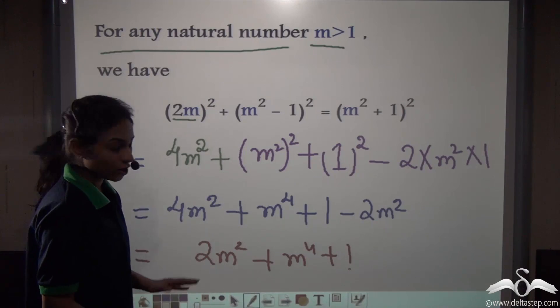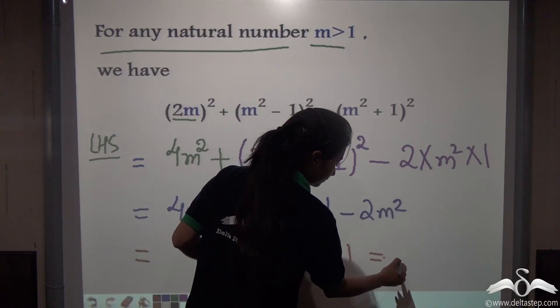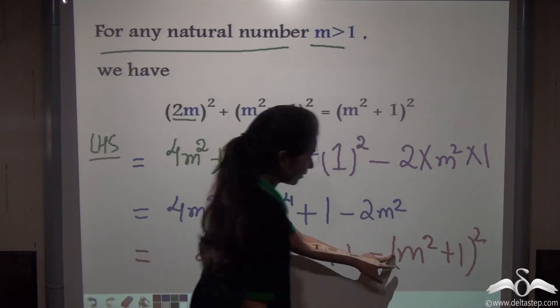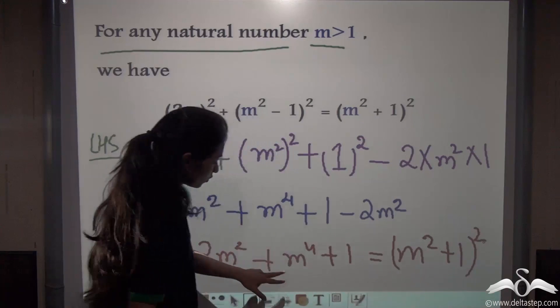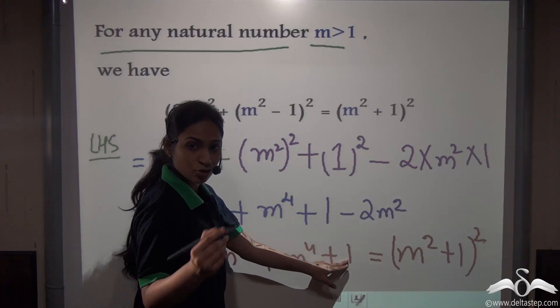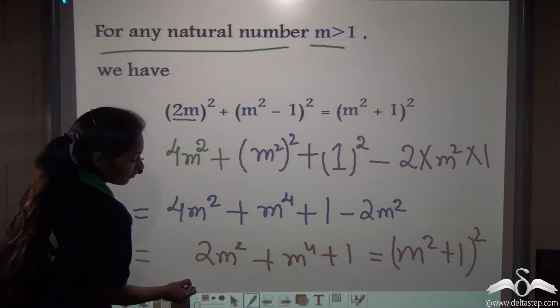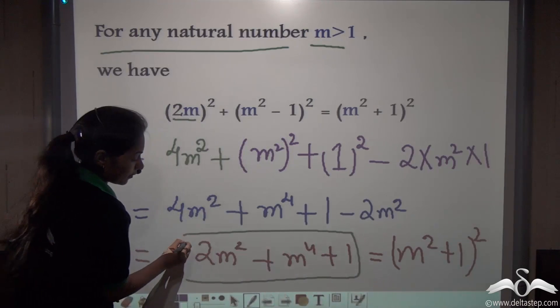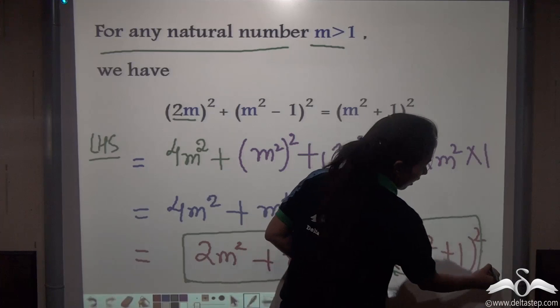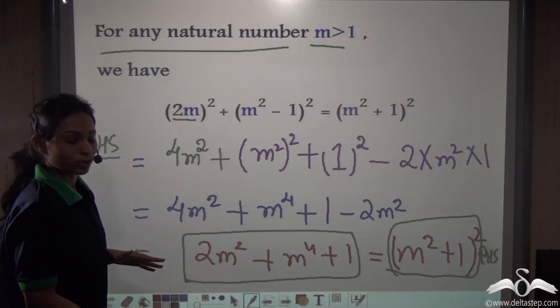4m squared minus 2m squared gives me 2m squared plus m to the power 4 plus 1. Well now if I factorize it, or let me simplify it, I will get what? m squared plus 1 whole squared. Check: m squared when squared gives you m to the power 4, plus 1 squared gives me 1, plus 2ab, 2m squared into 1 gives me 2m squared. So this is in the form of a plus b whole squared. So we arrive at RHS. So you can see how this is holding true for both sides.